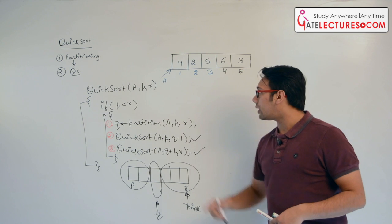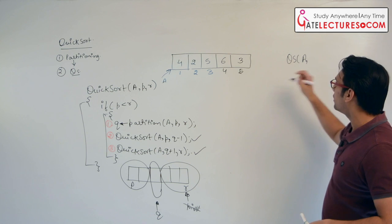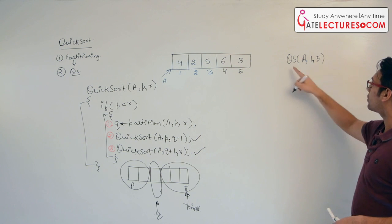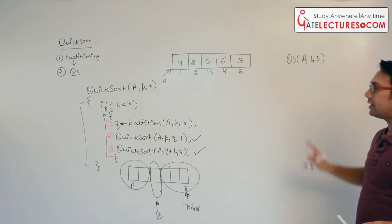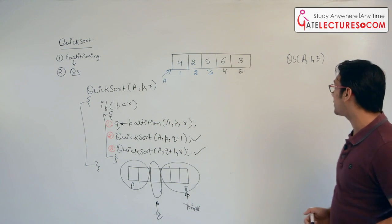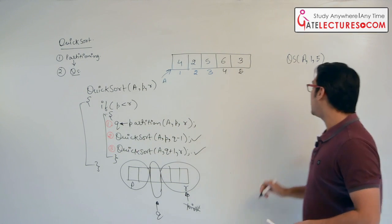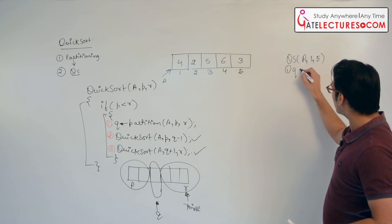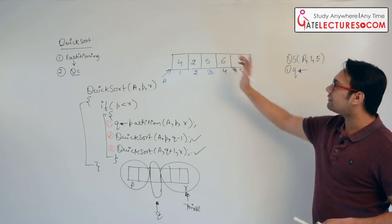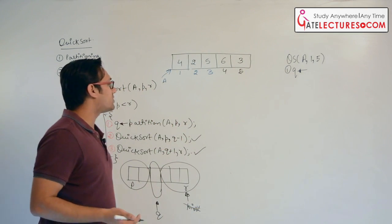Initially we are going to call quicksort(a, 1, 5). The if condition — is 1 less than 5? Yes, it will be executed; the condition is true. So we execute line number 1, which finds the value of q. That means we perform a partition on this array and from wherever the pivot element (3) is swapped, it gives us the index location of that position. So let us apply partitioning in this case.